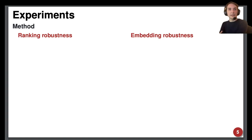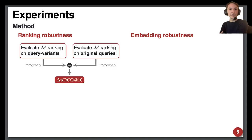Our experiment is split into assessing ranking robustness and embedding robustness. To evaluate ranking robustness, we evaluate the embedding model M as a dense retrieval model, once using the query variants and then using the original queries. This gives us two NDCG effectiveness scores, which we subtract to get the robustness score.